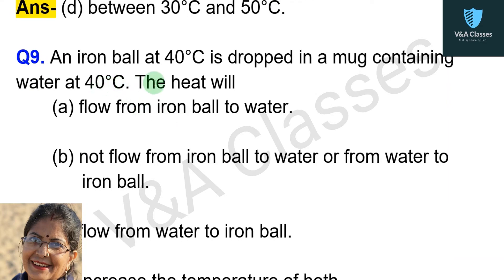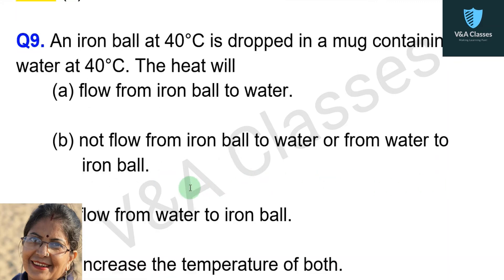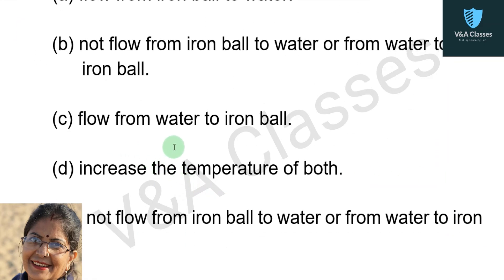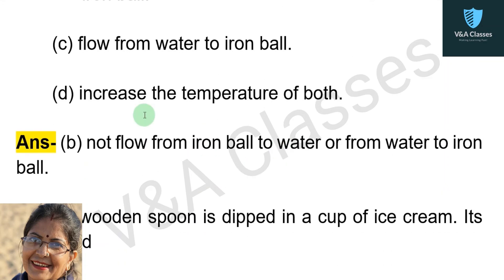Question number nine: an iron ball at 40 degrees Celsius is dropped in a mug containing water at 40 degrees Celsius. The heat will — option 1: flow from iron ball to water; option 2: not flow from iron ball to water or from water to iron ball; option 3: flow from water to iron ball; option 4: increase the temperature of both. Answer: not flow from iron ball to water or from water to iron ball.